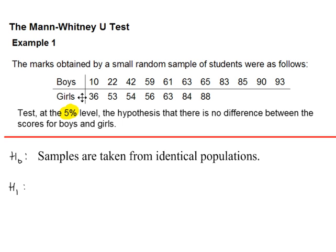H0, these two samples are taken from identical populations. So if the data for the boys and the data for the girls, these samples, if they both came from the same population, then the population average would be the same. And if the population averages for the boys and girls are the same, then there's no difference between them. That's what H0 states.